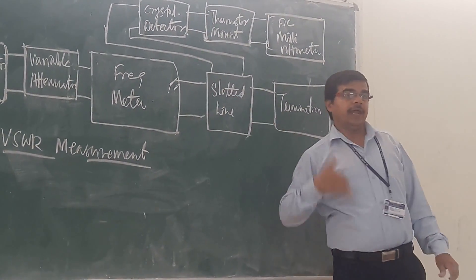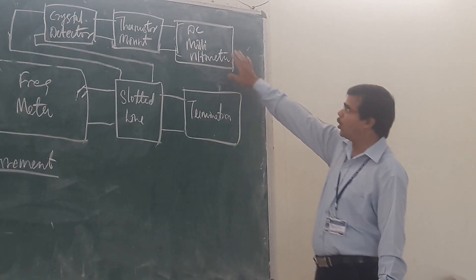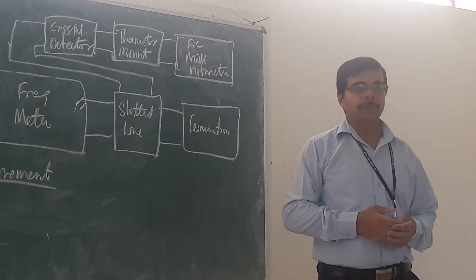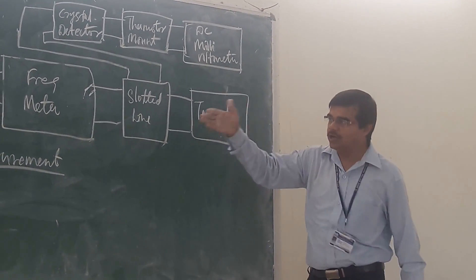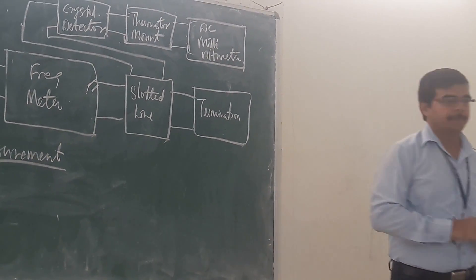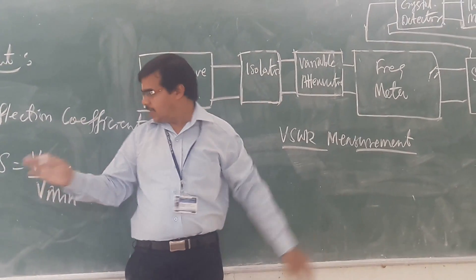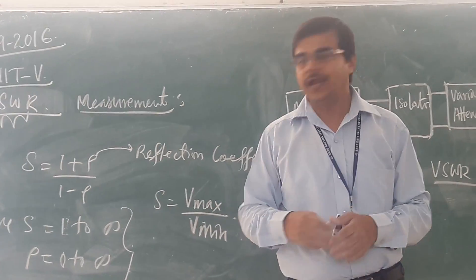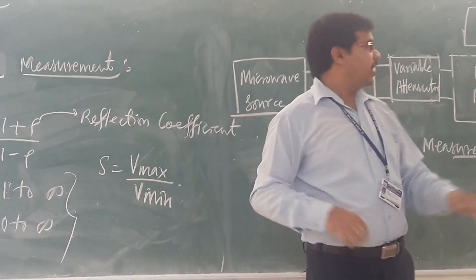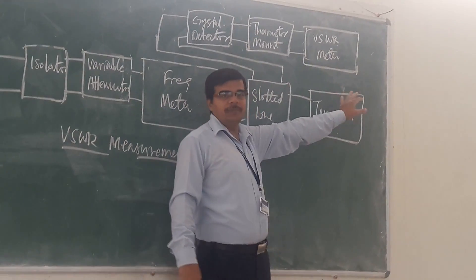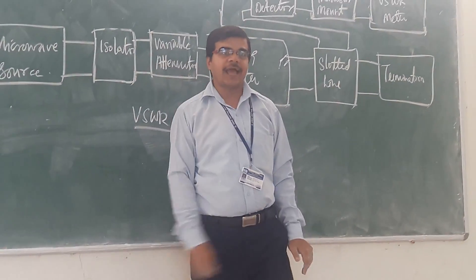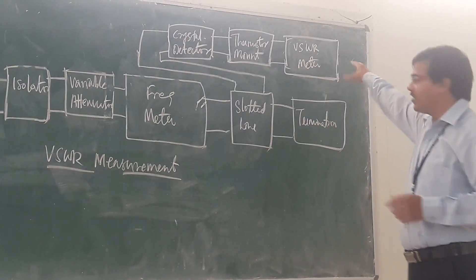This is your slotted line method. Another thing is that instead of going for your DC millivolt meter directly, we can have a VSWR meter. So if we are introducing the VSWR meter, there is no need for calculating V maximum and V minimum — the VSWR meter directly gives you the value of VSWR. No mathematical calculation is required. So this is the second way by which we can measure the VSWR.